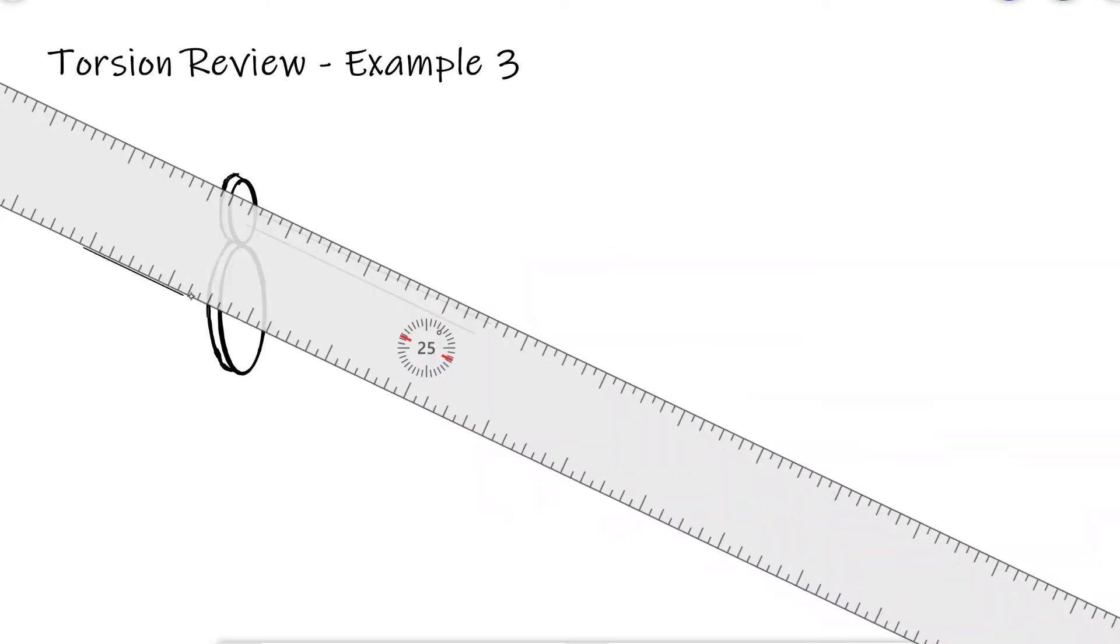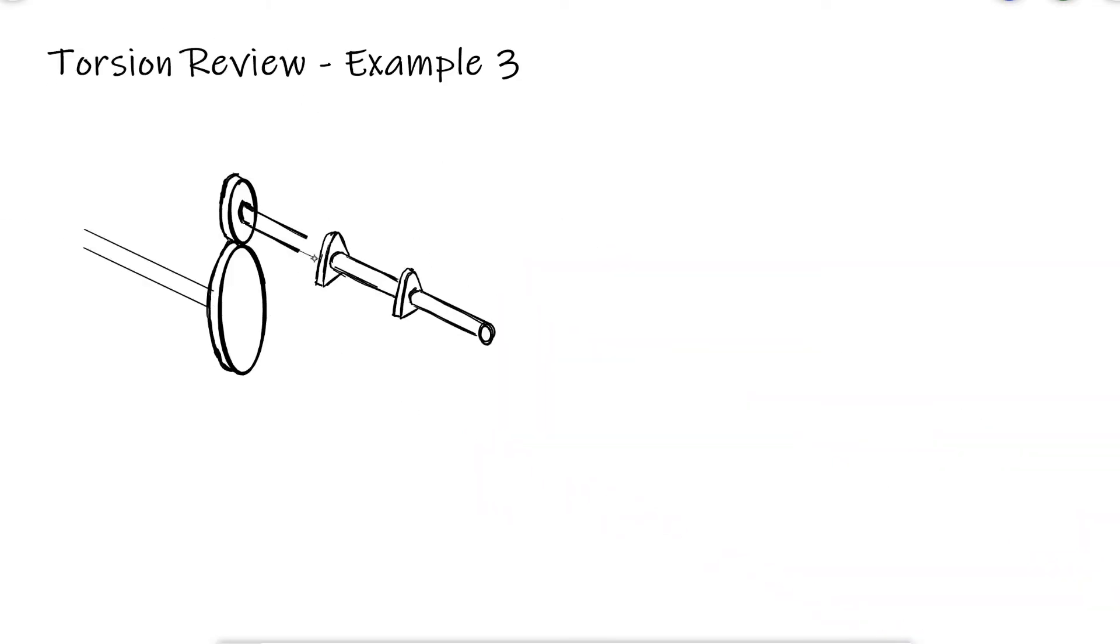For a gear shaft system, we plan to use two shafts made of the same material with the same diameter. The material for the shafts has a shear modulus of 80 gigapascals and a maximum allowable shearing stress of 60 megapascals.